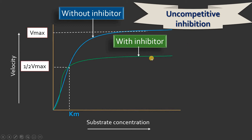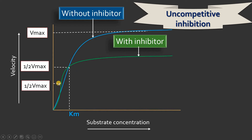There is a decrease in the maximum velocity, which we can clearly appreciate. Using the new Vmax for the reaction with inhibitor, we find the new half-maximum velocity. If we calculate Km for this graph with the inhibitor, the Km with the inhibitor is lower. Please notice that when you add an uncompetitive inhibitor, both Km and Vmax decrease.